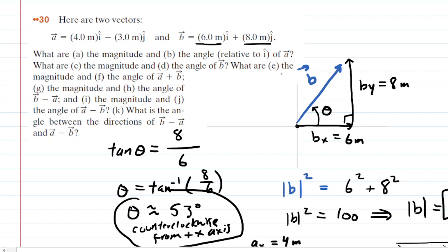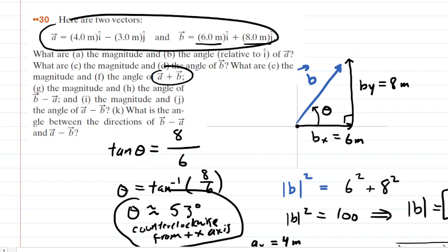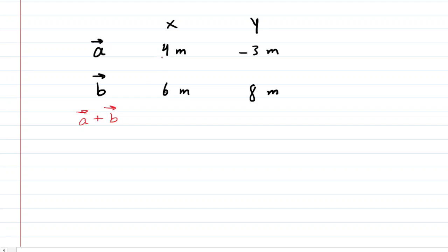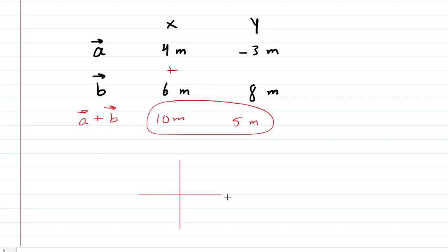In Part E, we need the magnitude of vector A plus B, and in Part F, its angle. We'll organize vectors A and B into a table with their X and Y components. Adding the X components: 4 plus 6 gives 10 meters. Adding the Y components: negative 3 plus 8 gives positive 5 meters. These become the X and Y components of vector A plus B. Drawing a new set of axes, we go 10 meters along the positive x-axis, then up 5 meters along the positive y-axis, and draw the resultant — that is the vector sum A plus B.